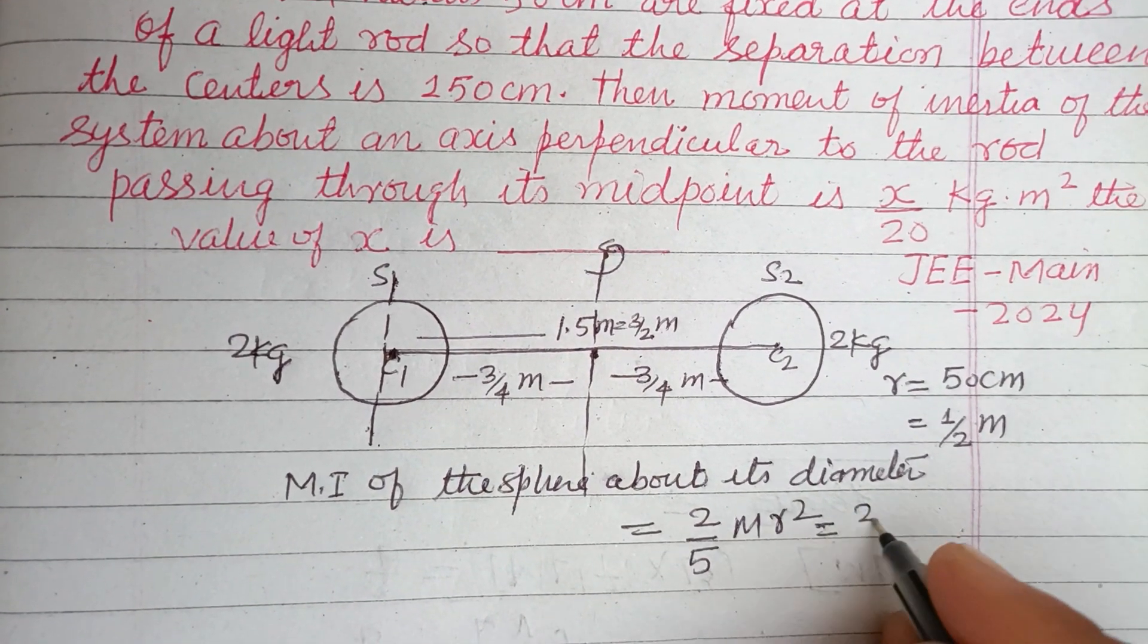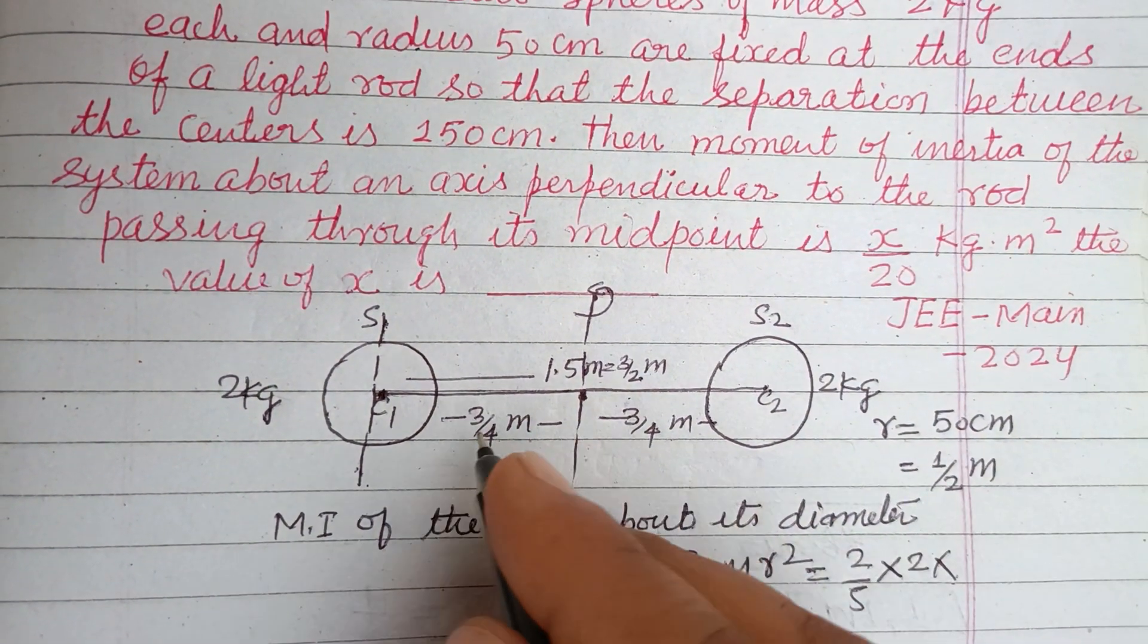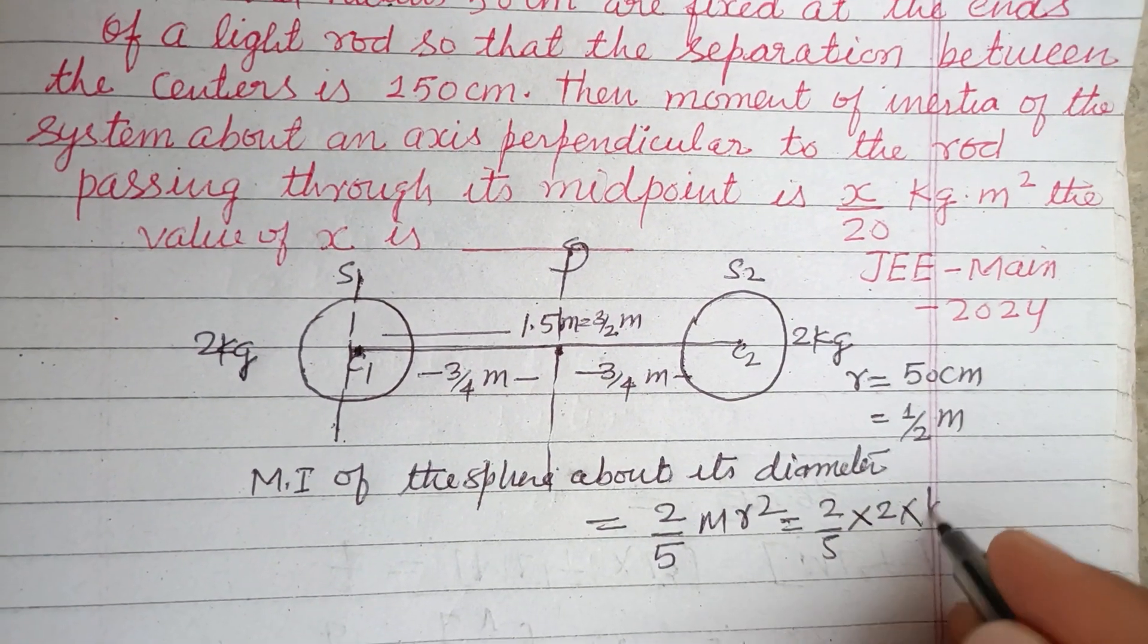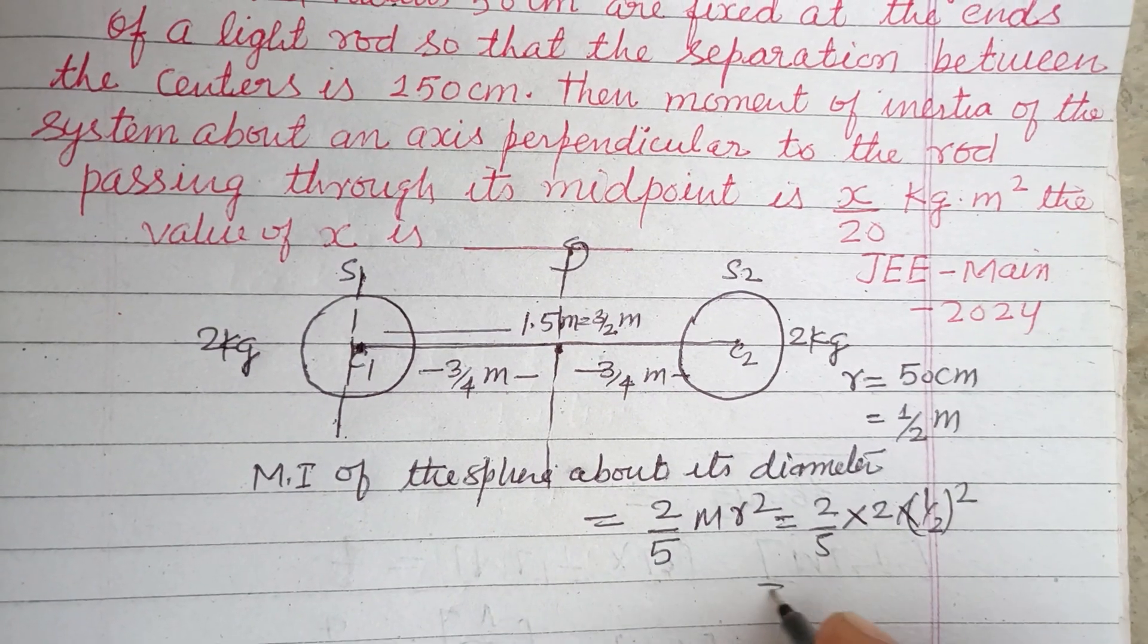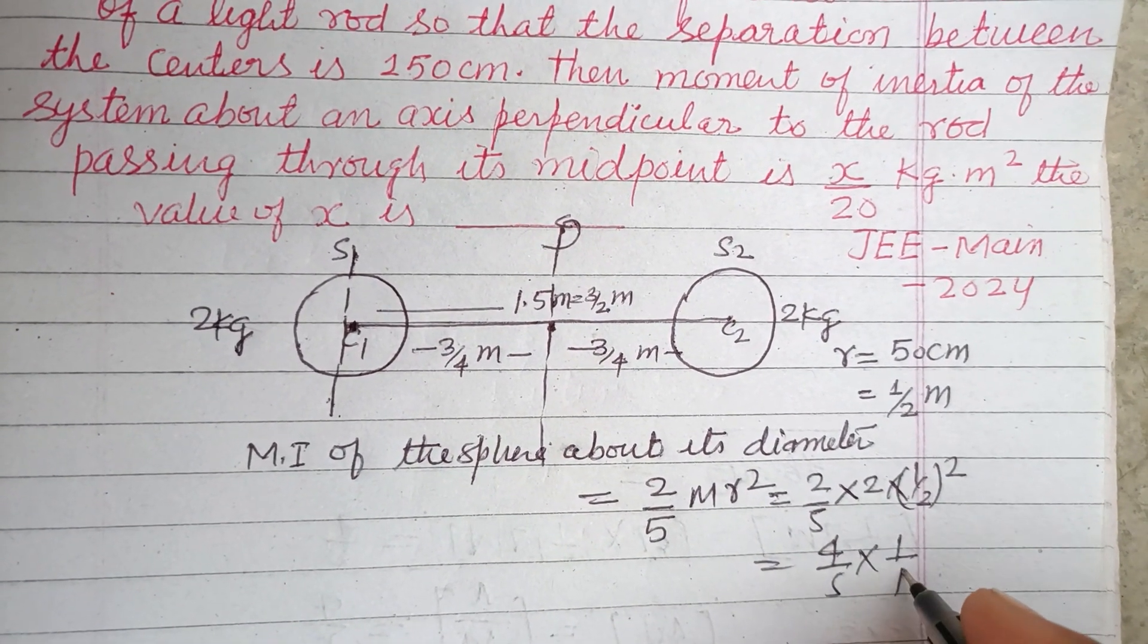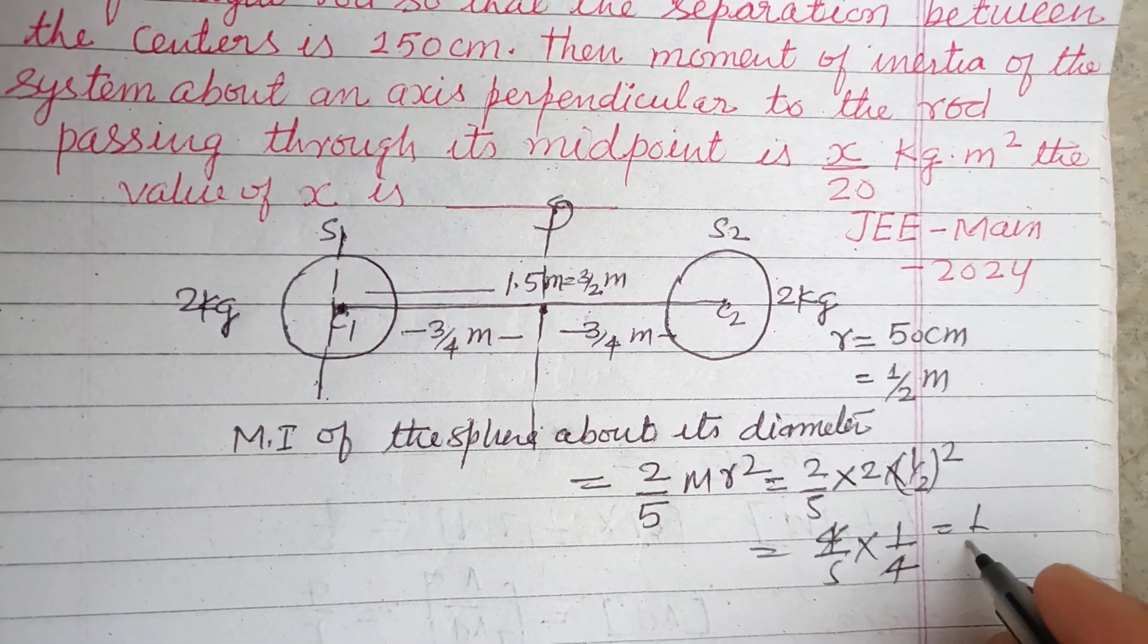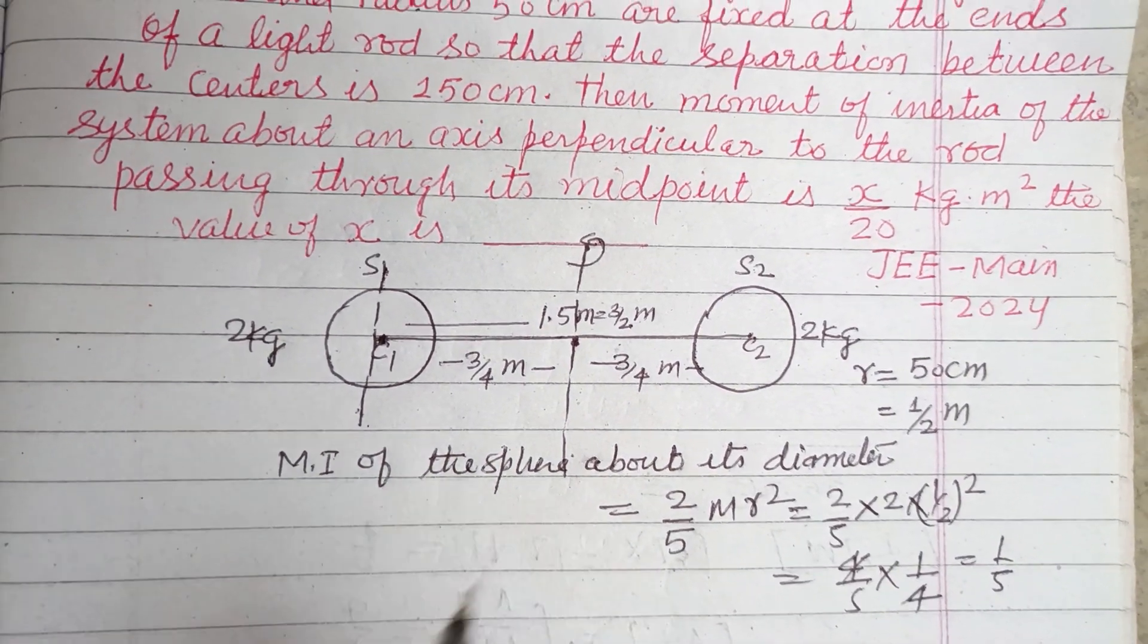So this is 2/5, M is given to us as 2 kg, and R is given to us as 1/2 meter. So this is 4/5 × 1/4, so 4's cancel, this is 1/5.